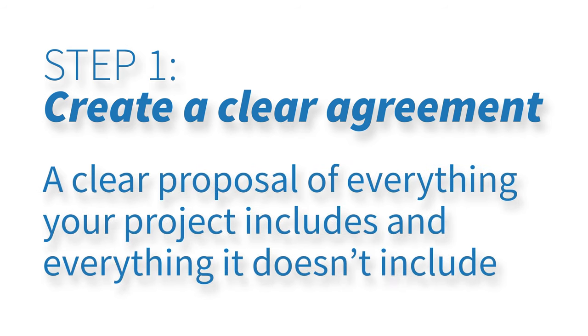Step one: you need to have a crystal clear contract or agreement — a clear proposal. Everything that your project includes and everything it doesn't include needs to be detailed: what you expect from the client and what they should expect from you. Things like how many revisions are included, the turnaround time, how many total revisions, and how many minor versus major revisions, because those are two completely different things. Put together clear terms and conditions so the scope doesn't creep on you, giving you a foundation to go back to and say, 'This is not in the scope of work — I'd be happy to do it but here's an invoice for that.'